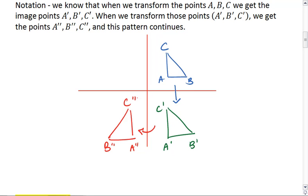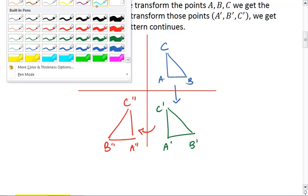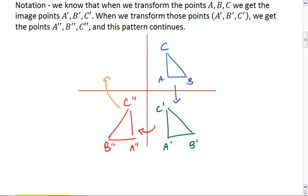If we wanted to, we could even take this further. Let's say we want to rotate it. And this would give us C triple prime, A triple prime, and B triple prime. For each successive transformation, we add just another prime or another little apostrophe after the letter.